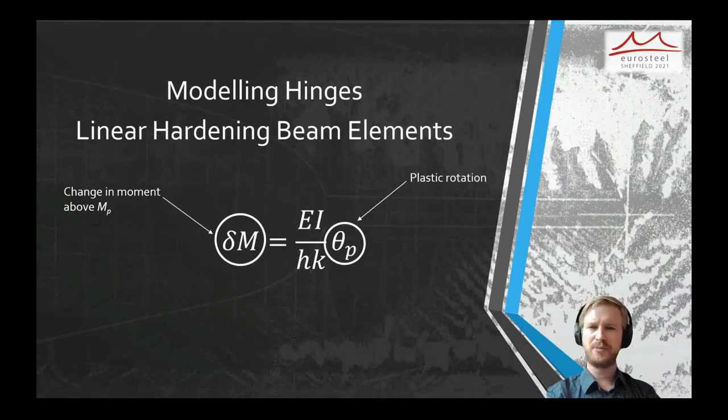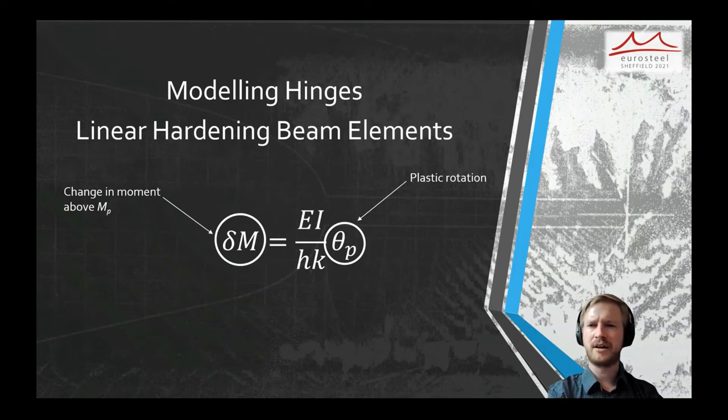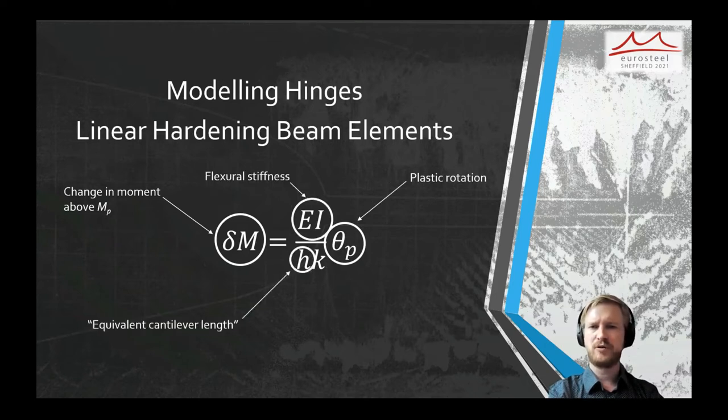The simplest method of including plasticity and strain hardening in the model is using Horn's theory of linear hardening. Horn basically said that the increase in moment above the moment capacity is directly proportional to the plastic rotation of the hinge multiplied by the flexural stiffness.